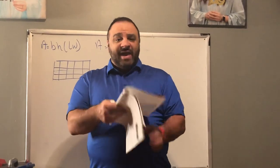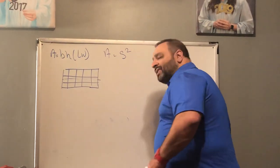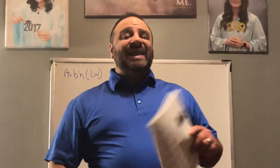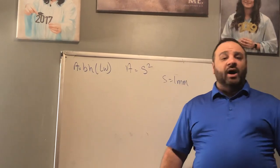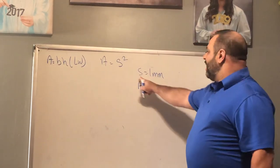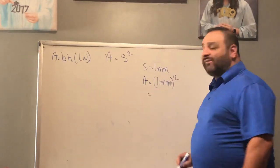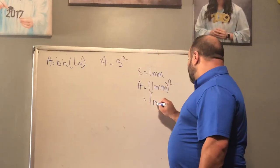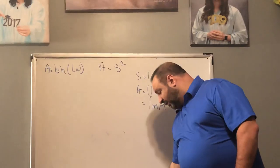Let's go to page five and practice. We're going to do the odds. Number five: we have a square where the side is one millimeter. Using A = S², that's 1 millimeter squared, which equals 1 — and the answer must be in square units: one millimeter squared.